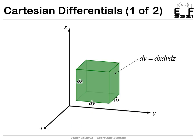First we have our differential volume. We have this little tiny box — despite me drawing it very large here, this is actually an infinitely small block. It has a side length along the X axis of DX, a side length along the Y axis of DY, and a height along the Z axis of DZ. So the volume of this little differential box is DX times DY times DZ, and we call that DV — the differential volume in Cartesian coordinates.